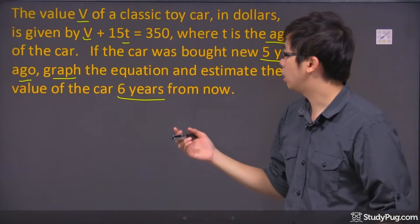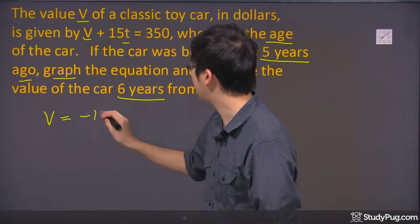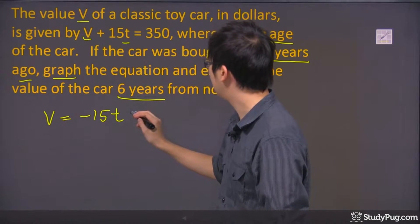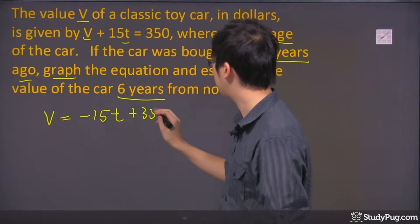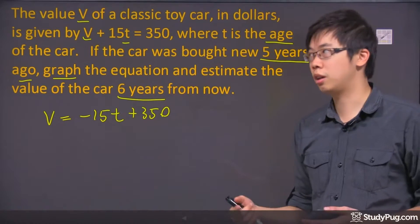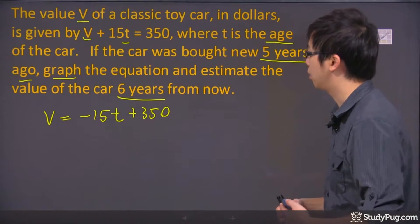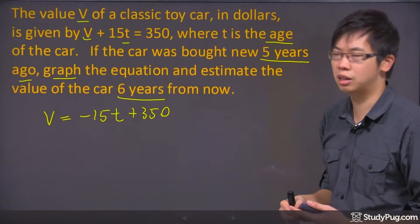So let's actually do the equation first. The value of the car is V = -15t + 350. So it's a minus, so it's a depreciation. I guess this car here does get cheaper the longer it gets. So I don't think it's really that classic anymore.